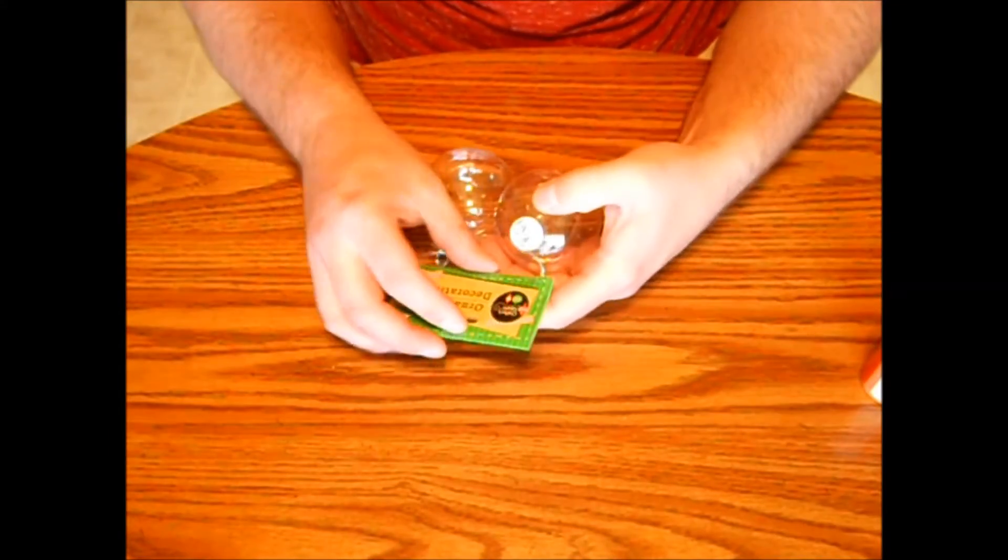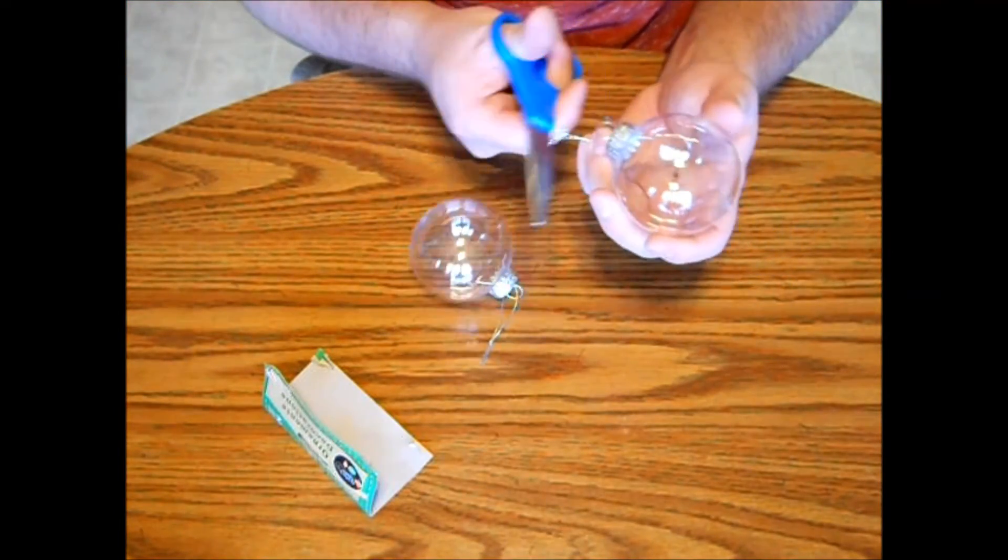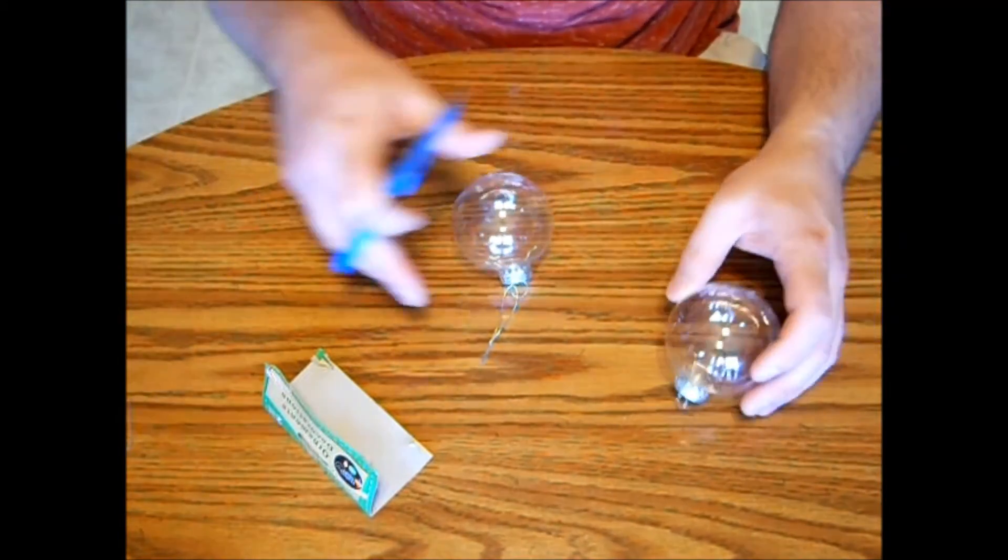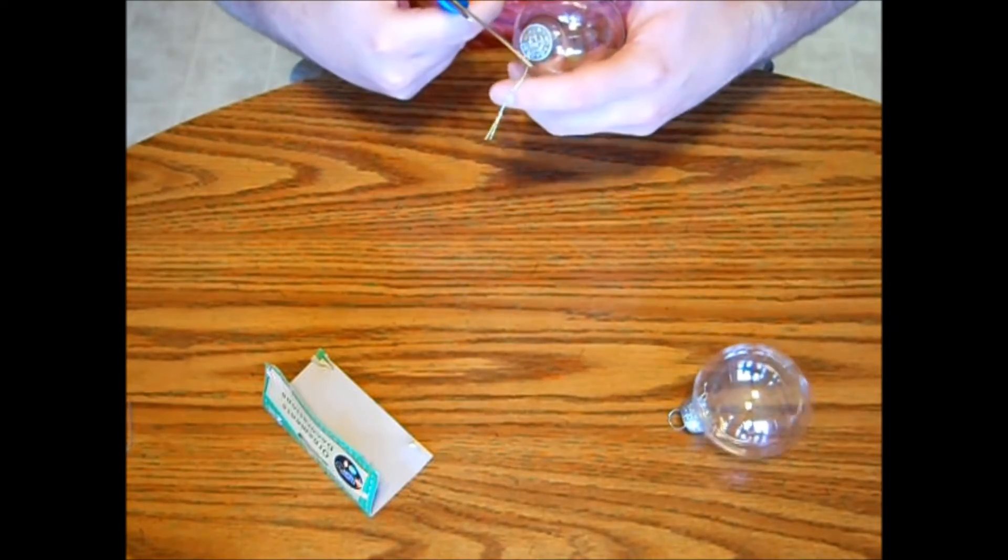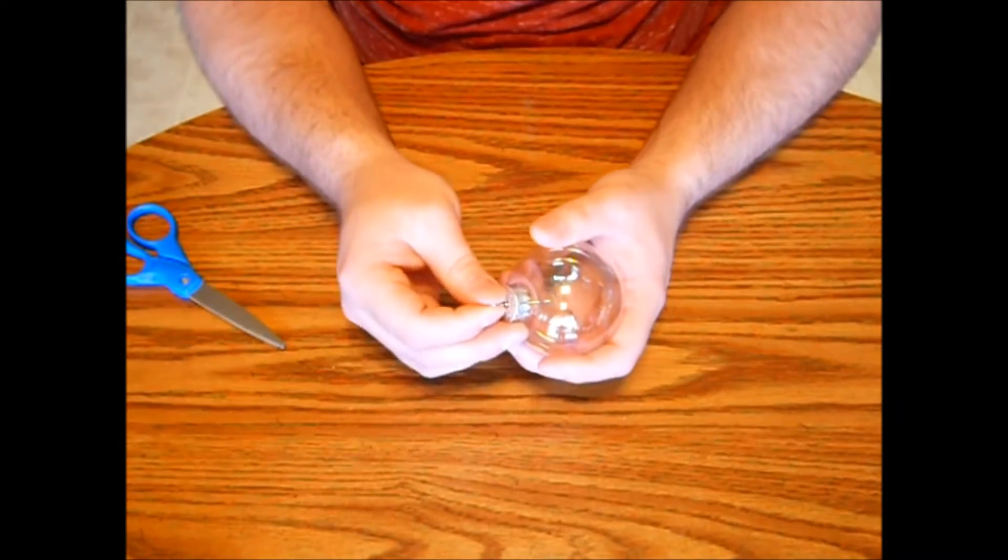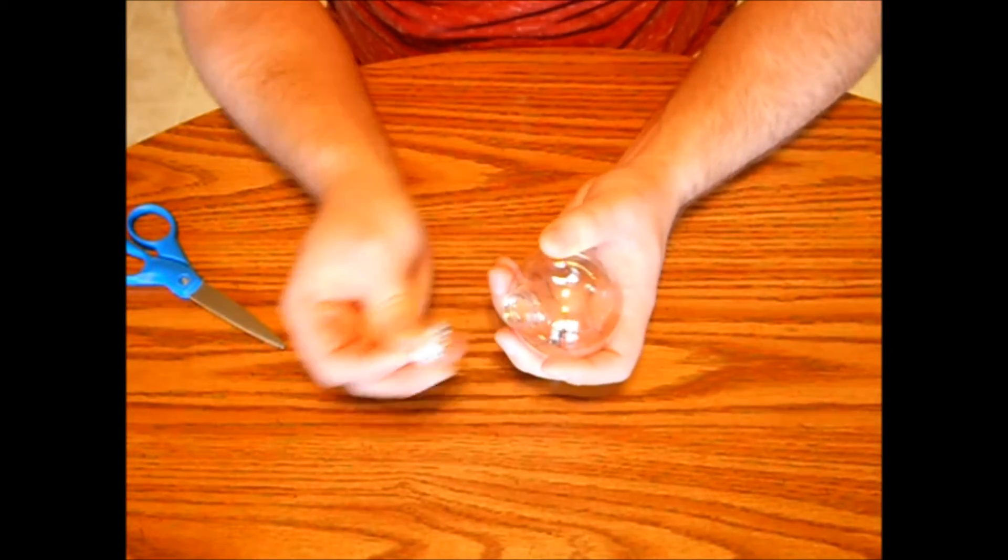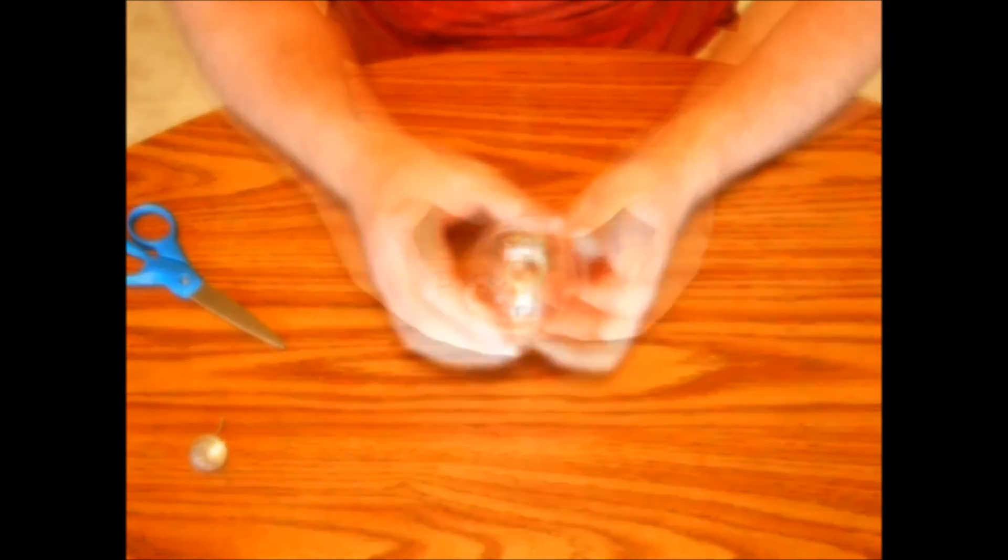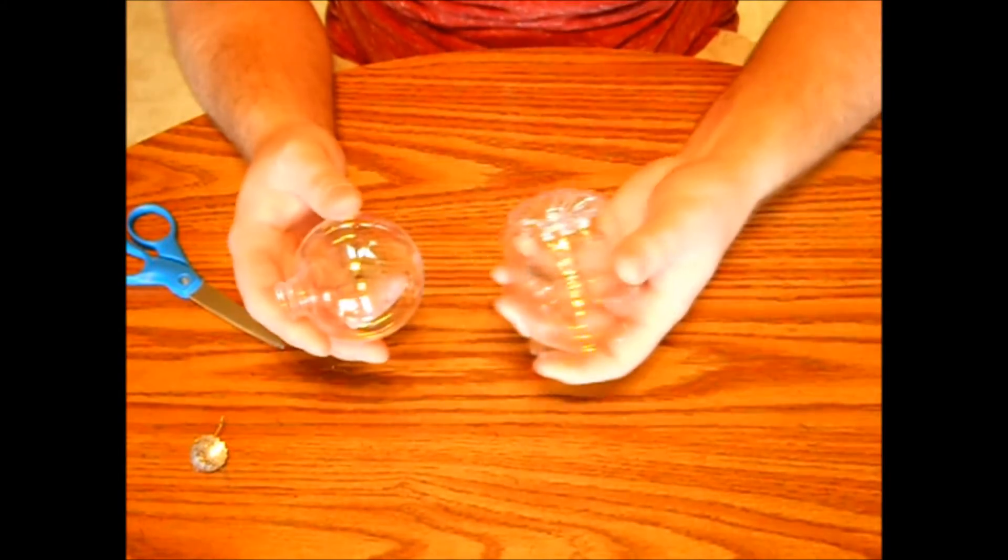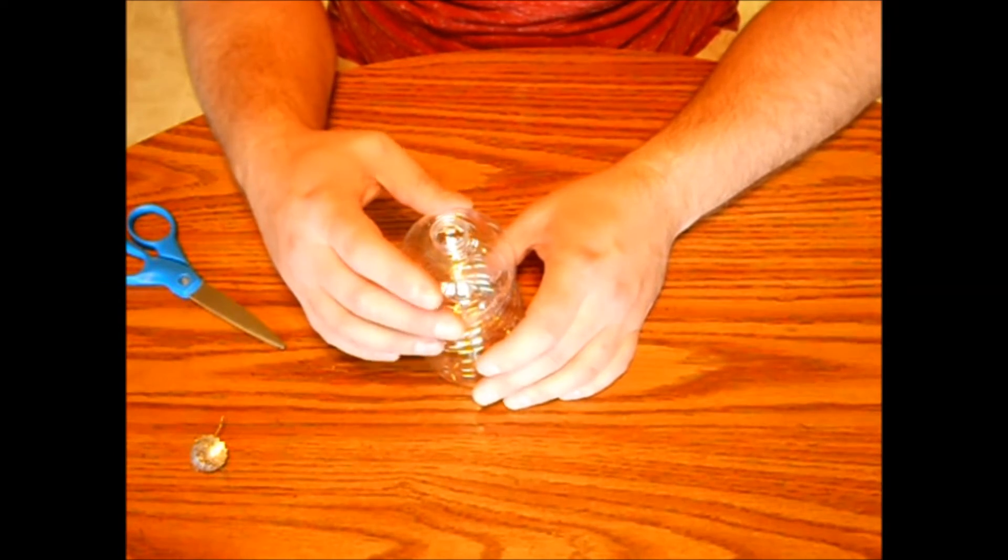Next, grab your ornaments. Like I said, I really don't like the hangers that came on here, so I'm just going to cut them off. And then carefully take off the top of your ornament. Next, what I did was I went and took a water bottle and I cut off the bottom. And that's just to hold my ornament upright.